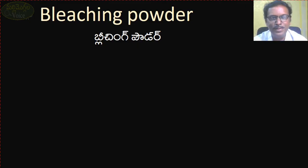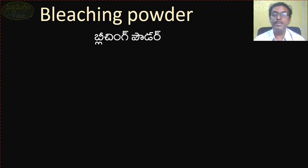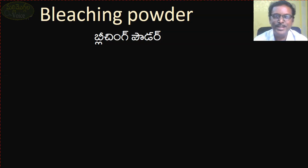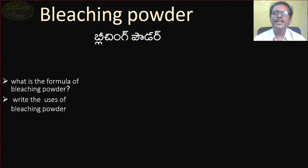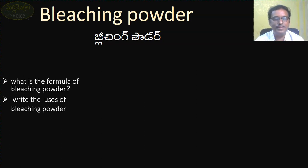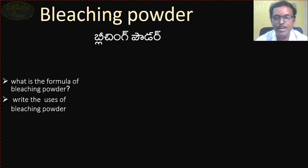Bleaching powder — you know already. The panchayat workers spread bleaching powder. Bleaching powder is used to kill germs. You know already, familiar. Nowadays it is very important. What is the formula of bleaching powder? These kinds of questions are coming in the public examination.